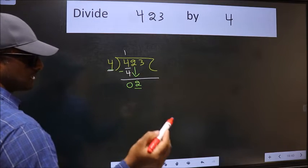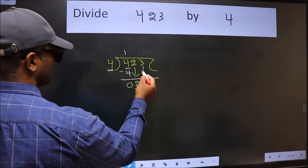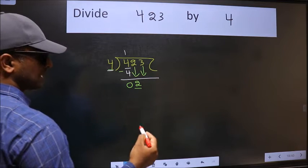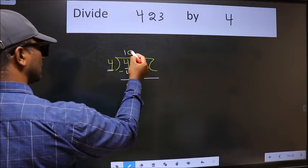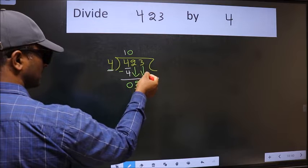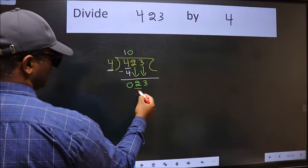So we should bring down the second number. And the rule to bring down the second number is we should put 0 here. Then only we can bring this number down. Now 23.